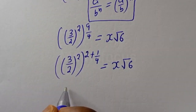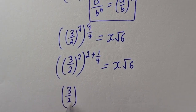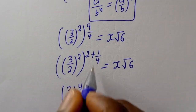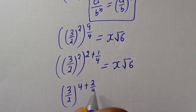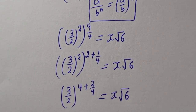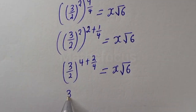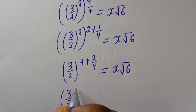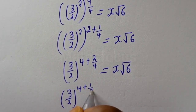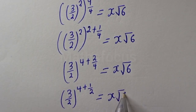This is 3 over 2 to the power of 4 plus 1 over 2, is equal to s square root of 6.